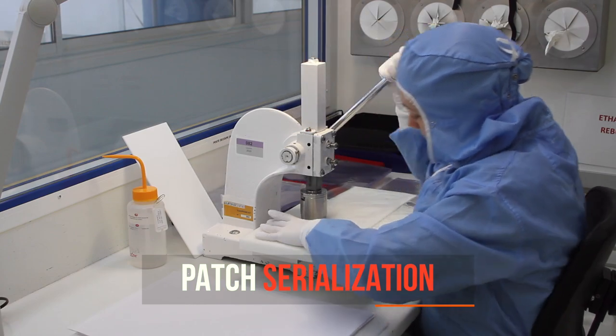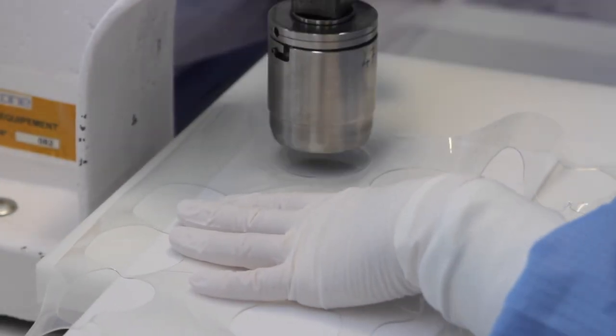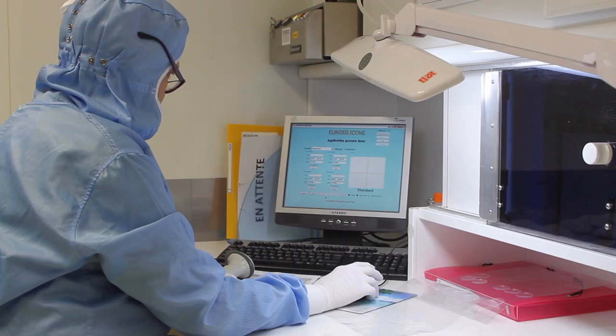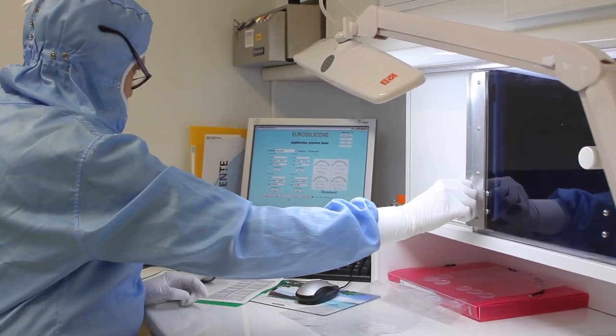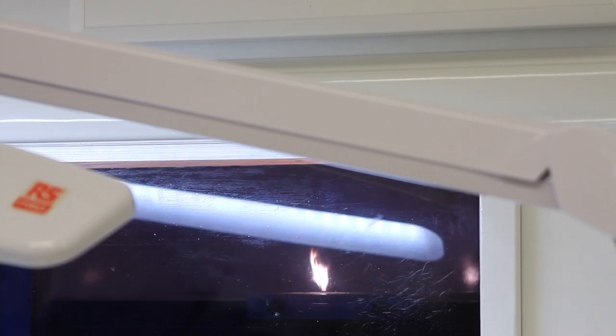So as you can see here, the shell is empty and we have a hole behind the shell. So the main objective of this step is to close the shell with a patch. And this patch has been serialized through a laser in order to have a unique serial number on the breast implant.